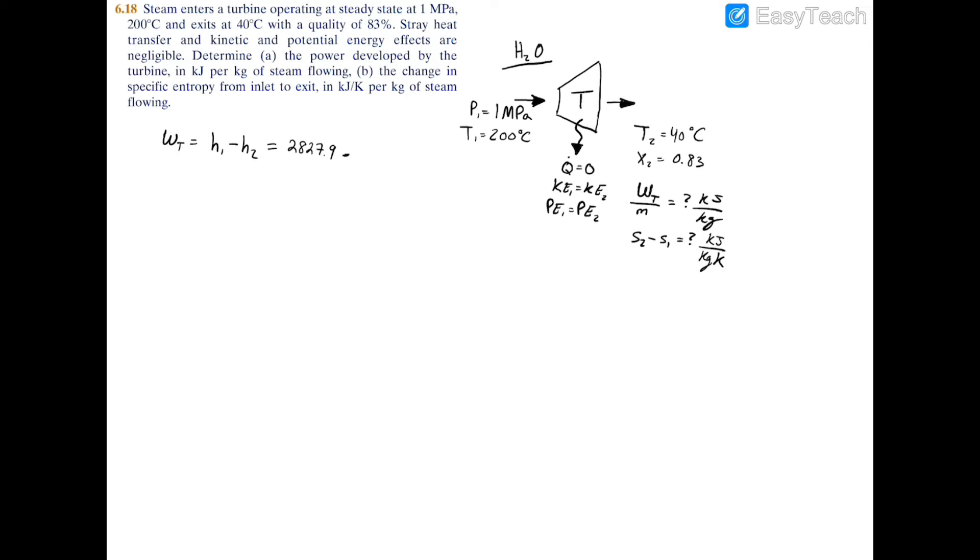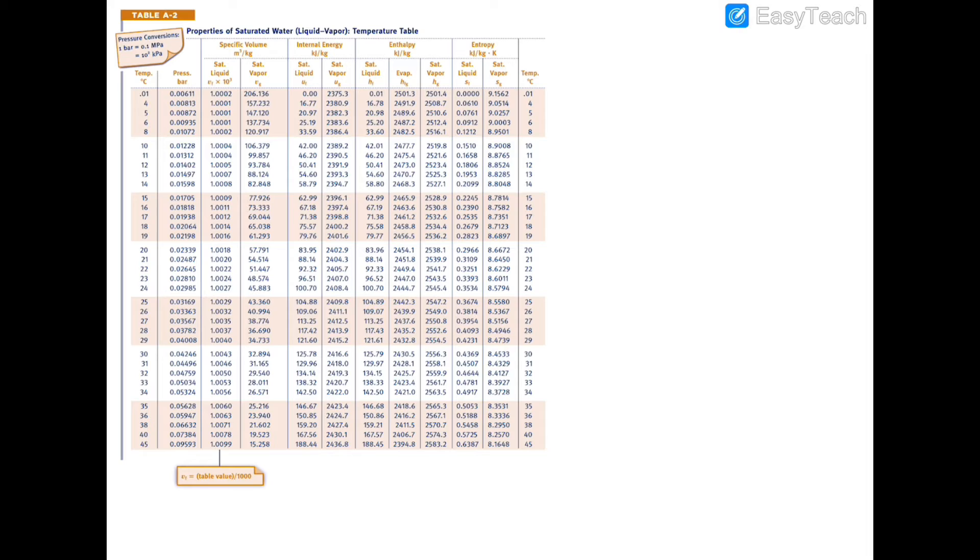To find h2, we have a two-phase mixture at 40 degrees celsius. If you turn to table A2 and go to 40 degrees celsius, which is all the way down here, and you look at your specific enthalpies over here, you have your fluid and gas specific enthalpies and you have a quality of 83 percent.